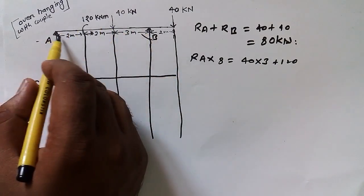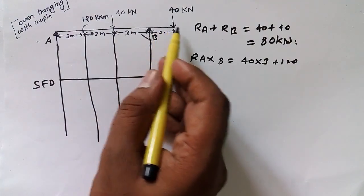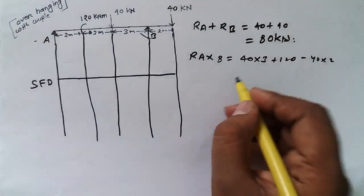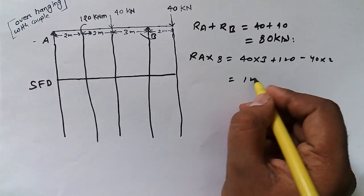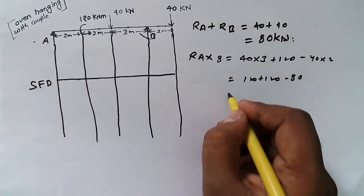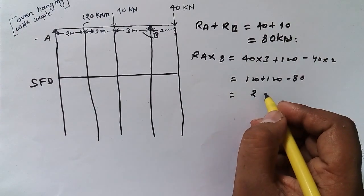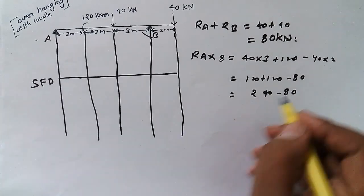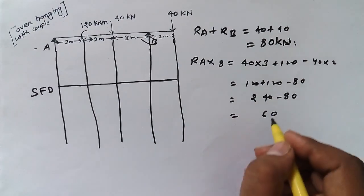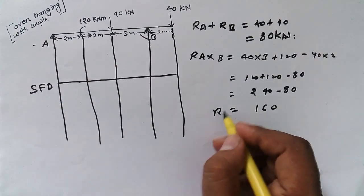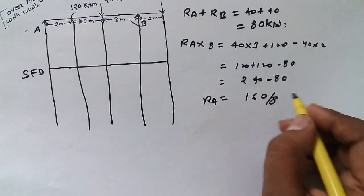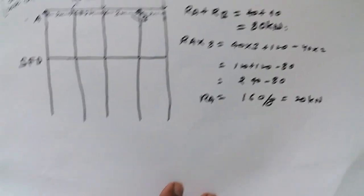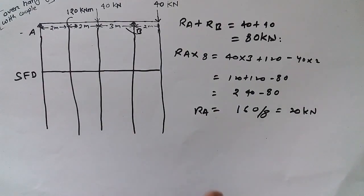Since we are taking this side as positive, we have to consider the other side as negative, so we write minus 40 into 2. Summing all terms: 120 plus 120 minus 80 gives 160. So Ra equals 160 divided by 8, which equals 20 kilonewtons.